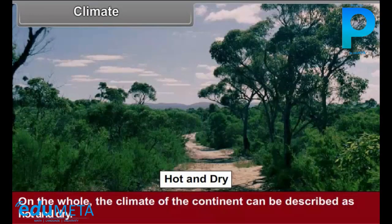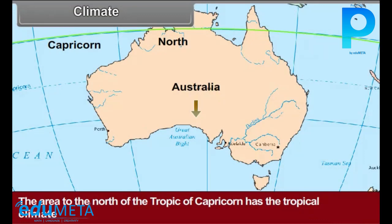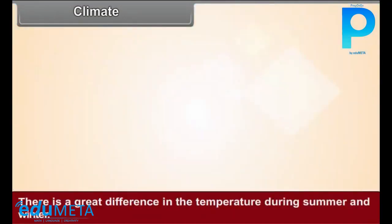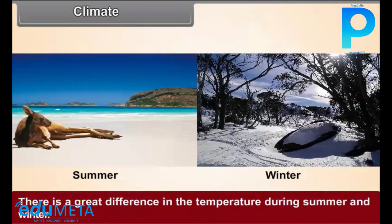Climate: On the whole, the climate of the continent can be described as hot and dry. The area to the north of the Tropic of Capricorn has a tropical climate, whereas to the south it is temperate. There is a great difference in temperatures during summer and winter.